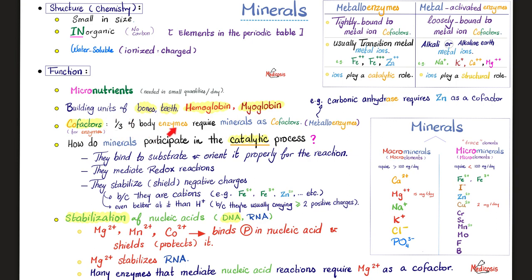They are cofactors for many enzymes. Indeed, one-third of the total enzymes in your body require some kind of mineral as a cofactor. Some of them require zinc. Others require manganese or magnesium or iron. Enzymes are catalysts. If I help the enzyme, I help with the catalytic process. Minerals can bind to the substrate before it binds to the enzyme and orient it properly so that the reaction can proceed like a sharp knife through warm butter. Minerals mediate reduction oxidation reactions. Minerals stabilize or shield the negative charges. Why? Because most of these are positively charged ions. They can shield the negative charges. Protons can do that too. But notice, most of these are divalent. Iron sometimes is trivalent. So they are even better than the proton in shielding the negative charge.